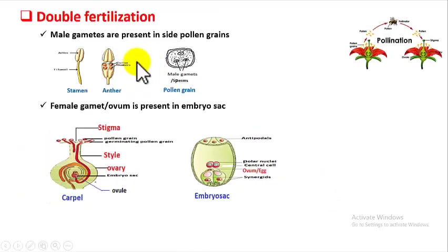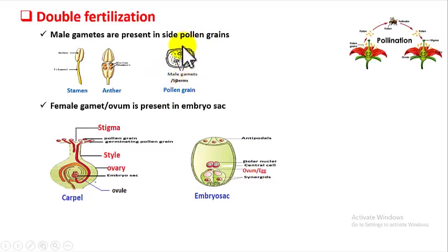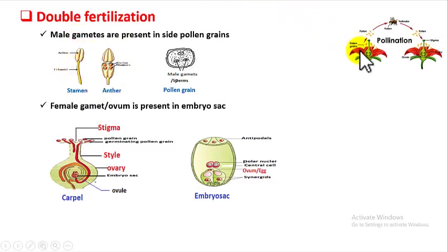First let us look at double fertilization. For fertilization to take place, there must be fusion of male and female gametes. Male gametes are present inside pollen grains. Pollen grains contain two male gametes and are present in the pollen chambers of anthers. The anther is a part of the stamen, which is the male reproductive structure of the flower.